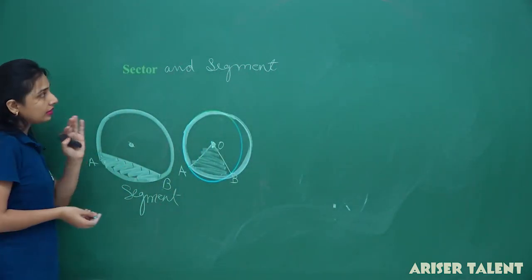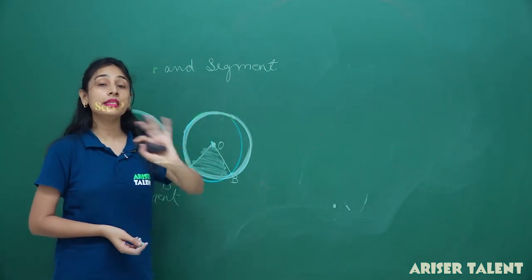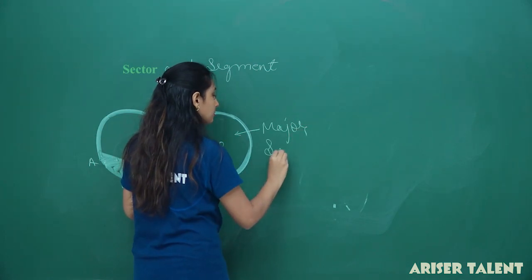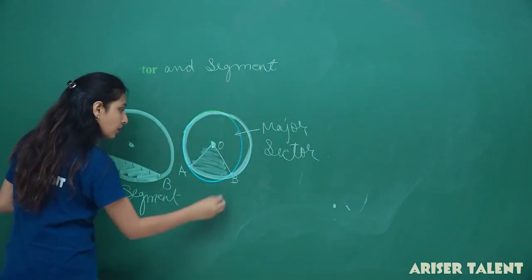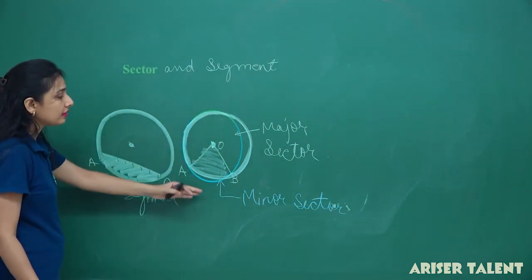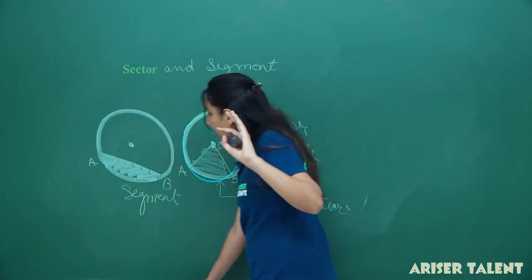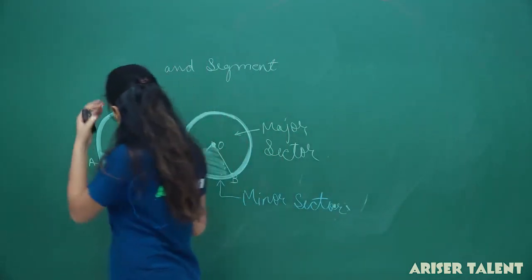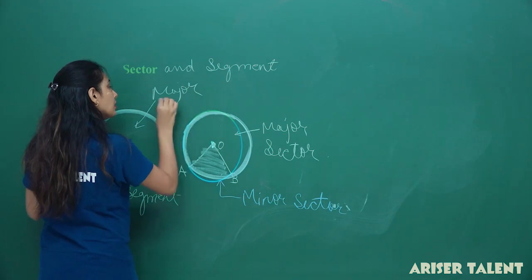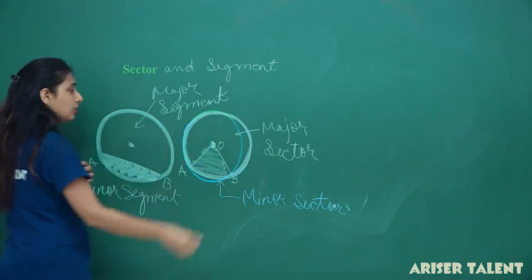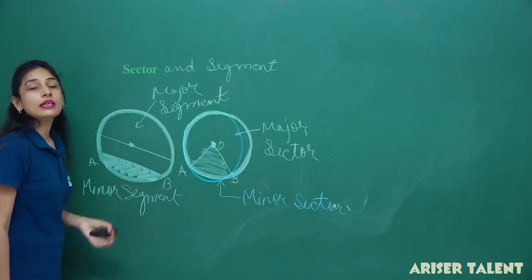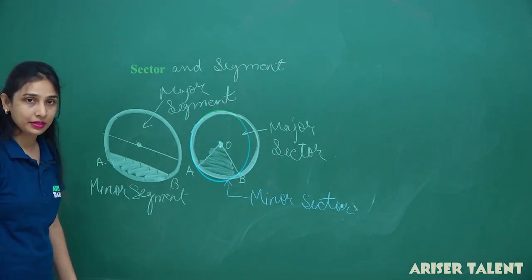Your pizza slice is a sector and the remaining portion is a segment. I can also name it as major sector and minor sector — what I was eating is my minor sector. Similarly, we can name it as minor segment and major segment. If you draw a diameter here, these segments will be equal — major segment equals minor segment.